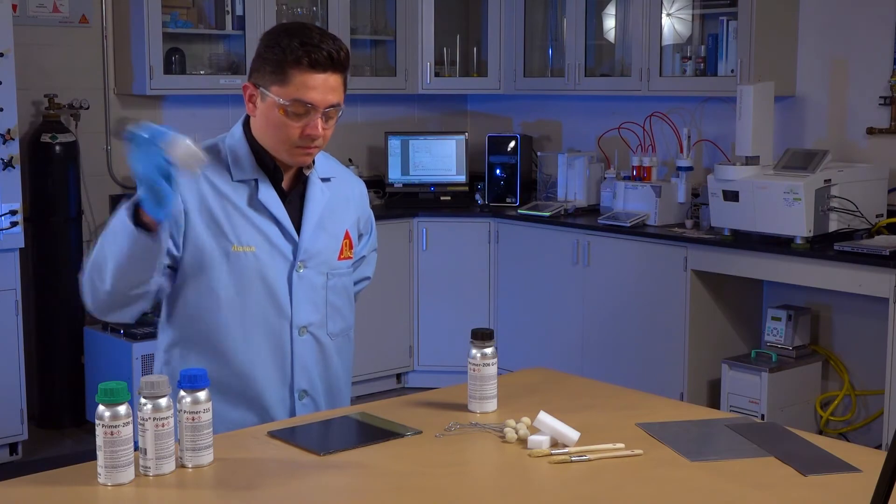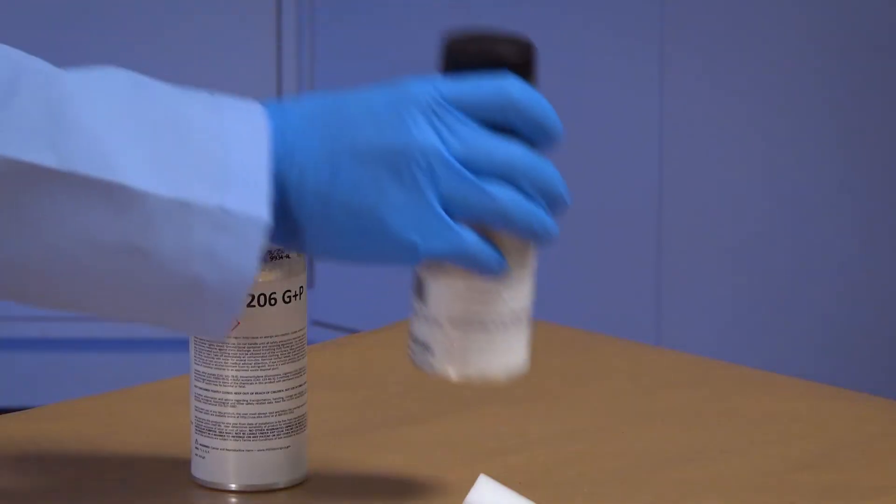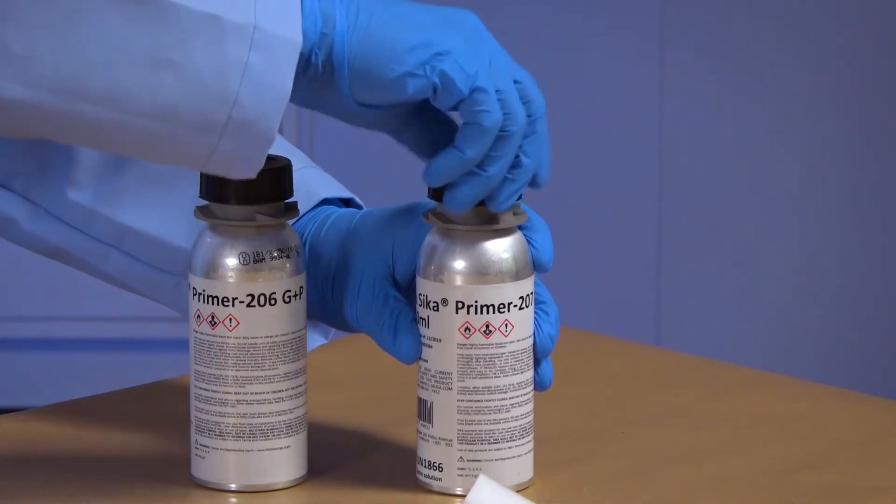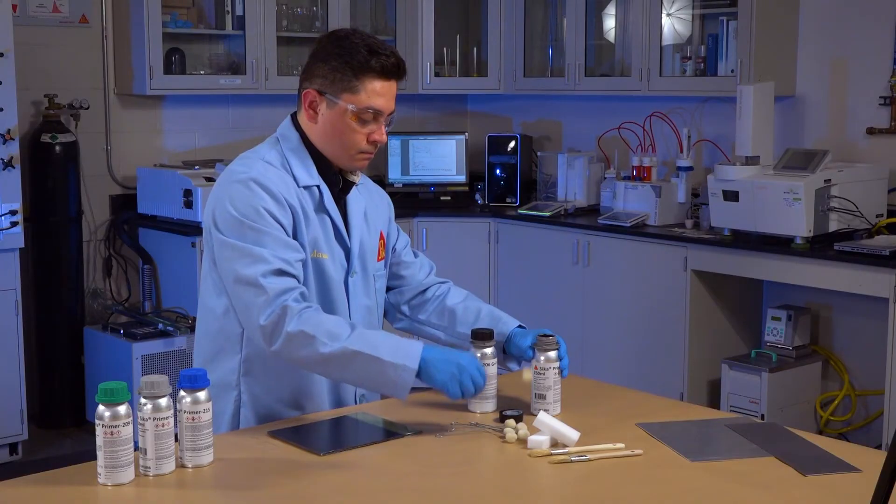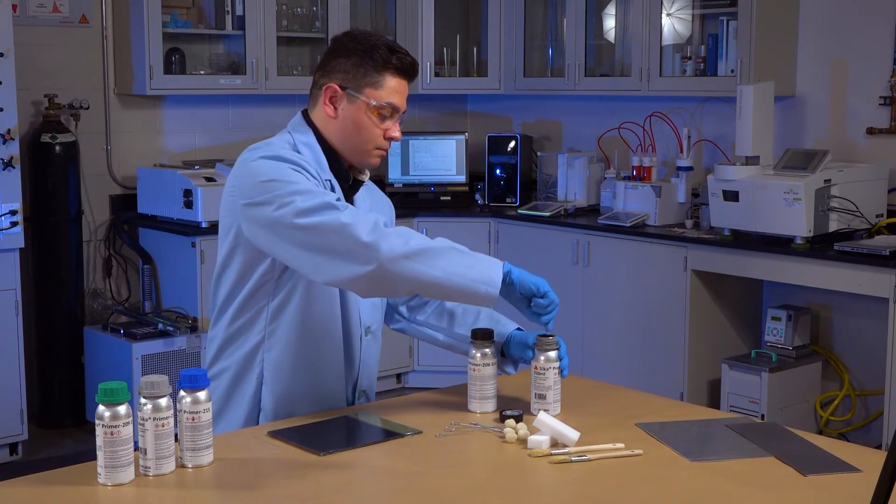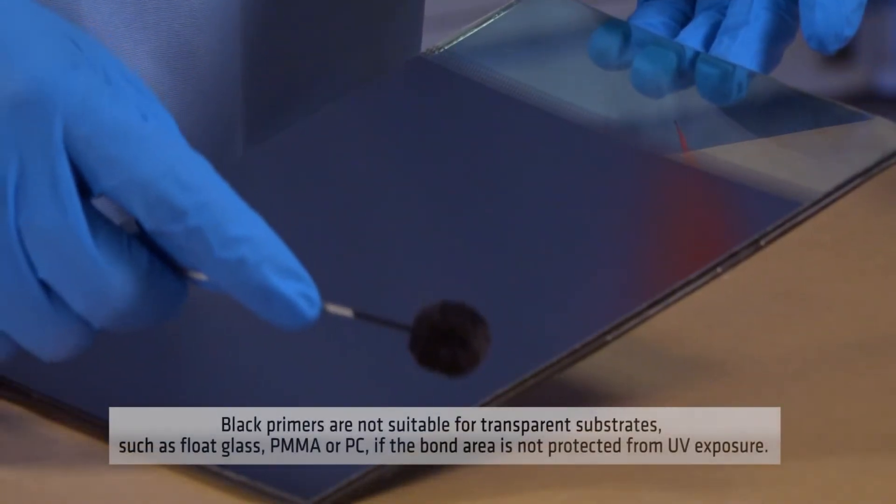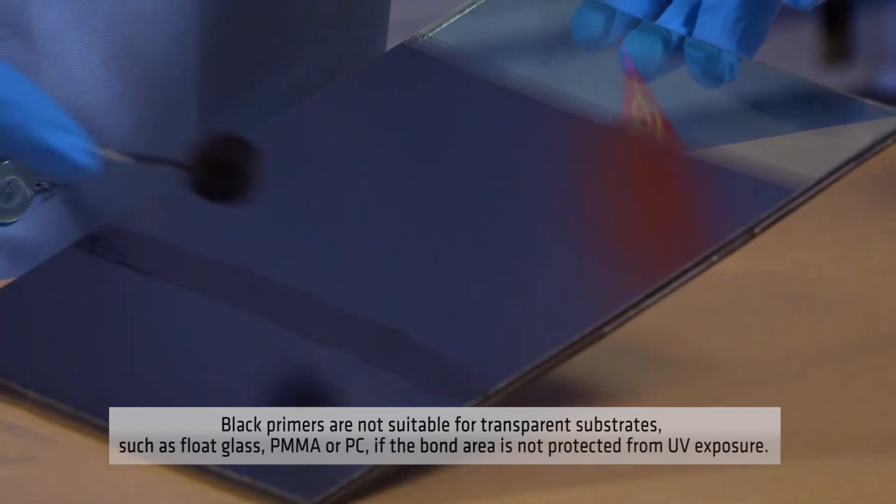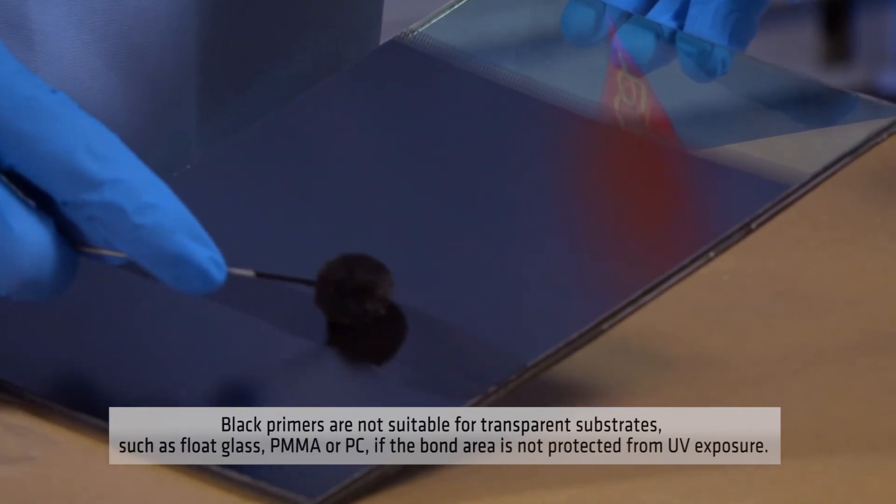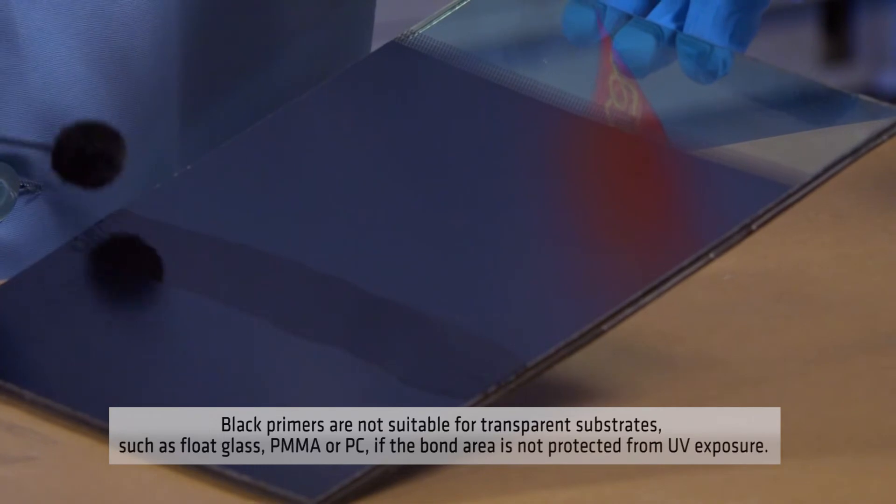Primers are only partly capable of protecting the bond line against UV radiation. If a ceramic screen print is not dense enough, Cica Primer 206 G Plus P or Cica Primer 207 AGR can enhance the tightness of the screen print. Nevertheless, black primers are not suitable for transparent substrates such as float glass, PMMA, or polycarbonate if the bond area is not protected from UV exposure via another primary protection means.